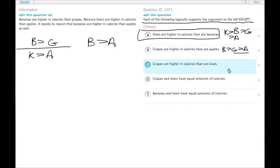For C, grapes are higher than kiwis. We know bananas are greater than grapes, and if grapes are higher than kiwis, we know kiwis are higher than apples. And again, what this one gave us still gave us B is greater than A.